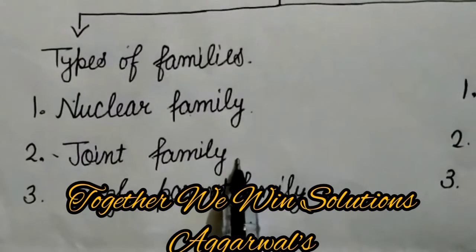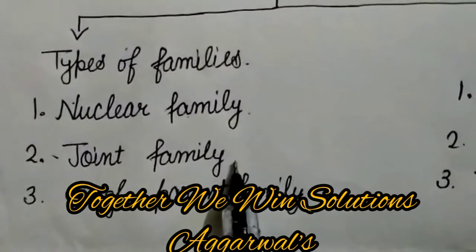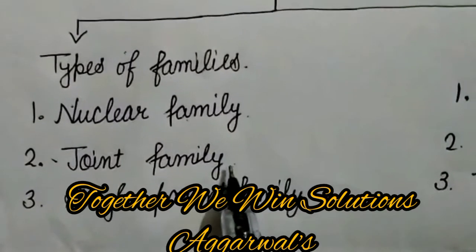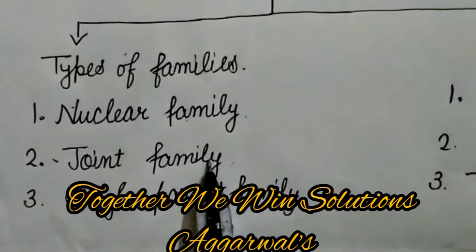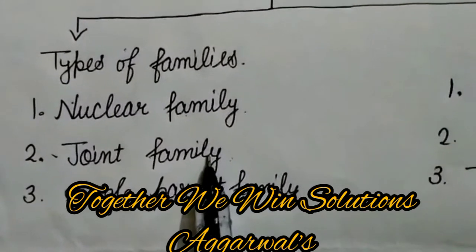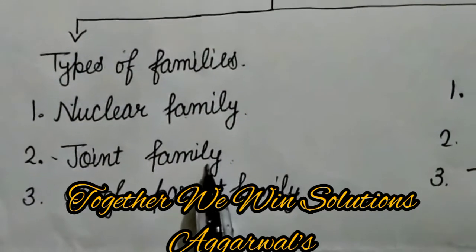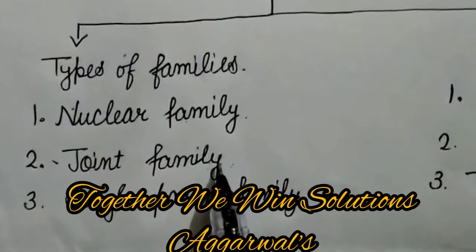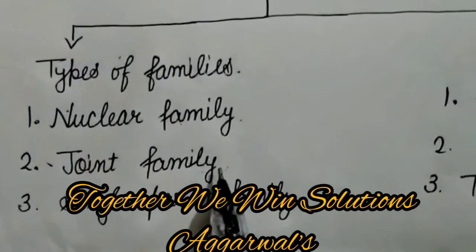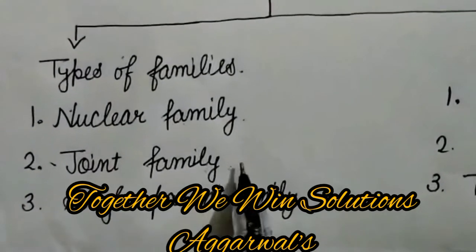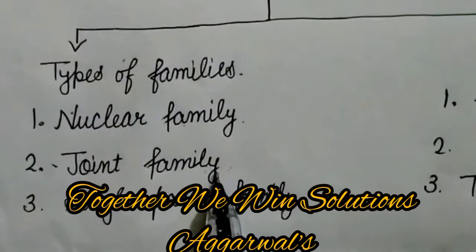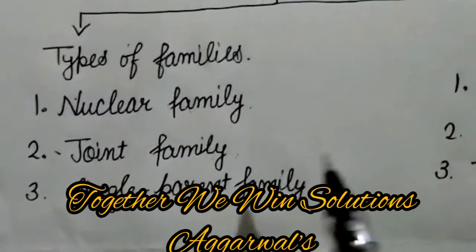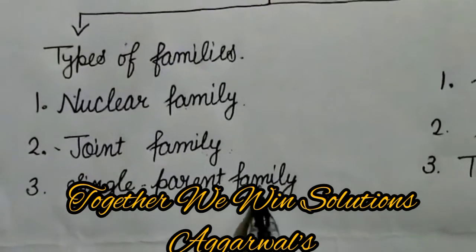Second is joint family. What is joint family? There are so many members in a family, like grandparents — grandmother, grandfather, uncle, aunt, mother, father, cousins, sister, brother. They all live in the same house and are related to each other. This is called a joint family. Third is single parent family.